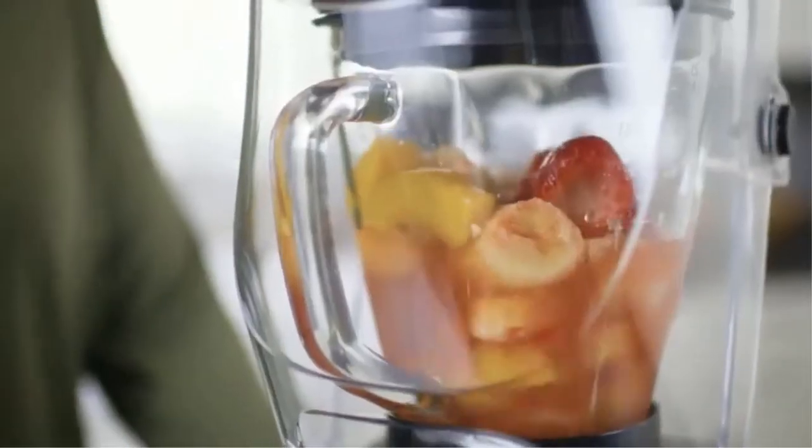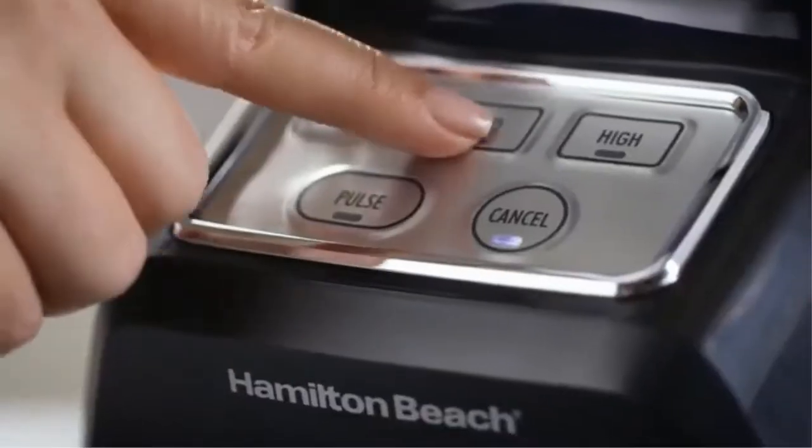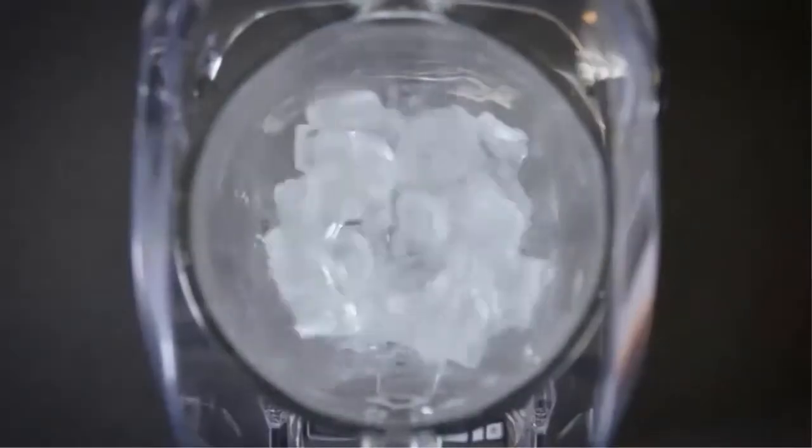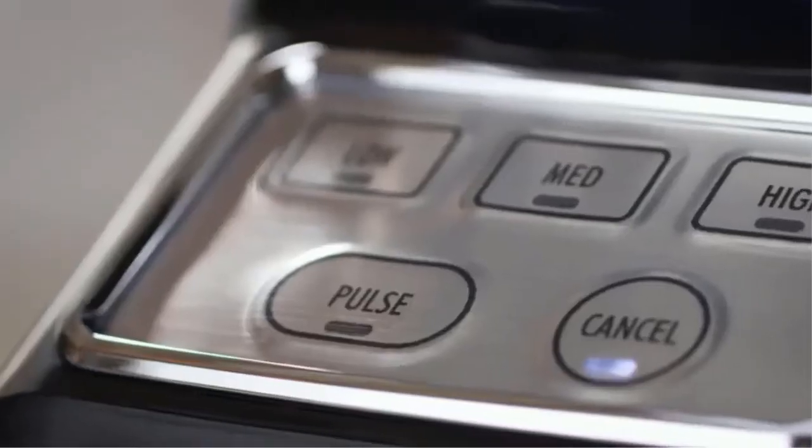The 950 is a powerhouse when it comes to smoothies, icy drinks, salsa, soups, hummus, and more. It crushes ice with a 950 watt peak power motor and stainless steel blades. Three speeds with pulse ensure control blending and desired results every time.